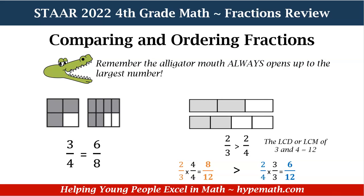Now let's look at our shapes on the right-hand side. We have a rectangle. The top rectangle is divided into three equal parts, and two parts are shaded, so two-thirds is my fraction. For the rectangle on the bottom, it is divided into four equal parts and two of those parts are shaded, so two-fourths is my fraction. Now since my denominators are different, what I need to do is find the least common denominator or least common multiple. The least common denominator of three and four is twelve, because in order to compare or order fractions, I need to have my denominators the same.